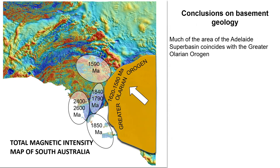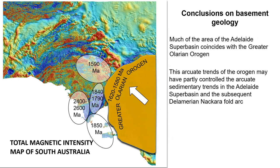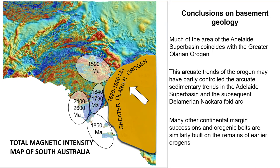Much of the area of the Adelaide Superbasin coincides with the greater Olarian Orogeny. The arcuate trends of this orogen may have partly controlled the arcuate sedimentary trends seen in the Adelaide Superbasin and also in the subsequent Delamerian Nackara Fold Belt. Many other continental margin successions and orogenic belts around the world are similarly built on the remains of earlier orogens.